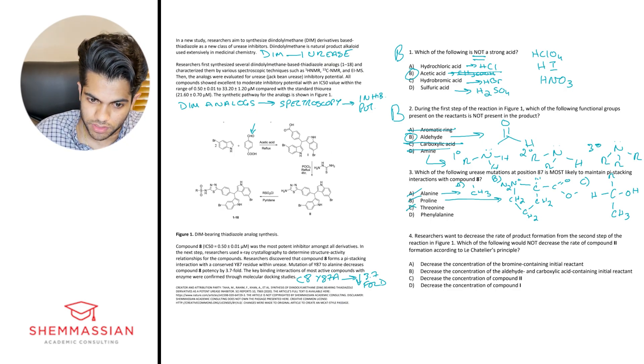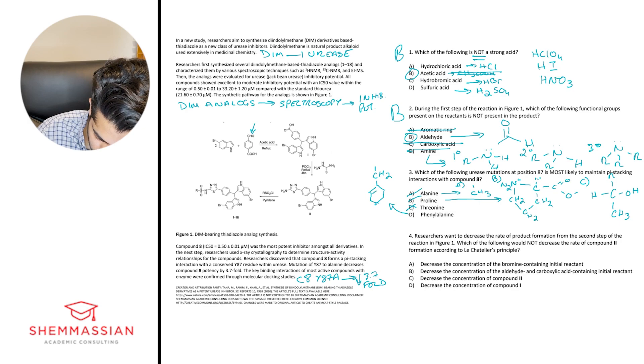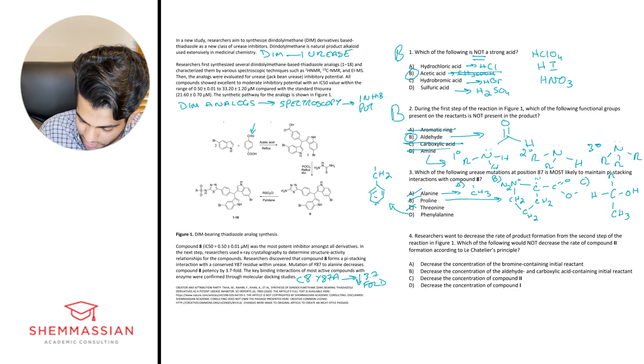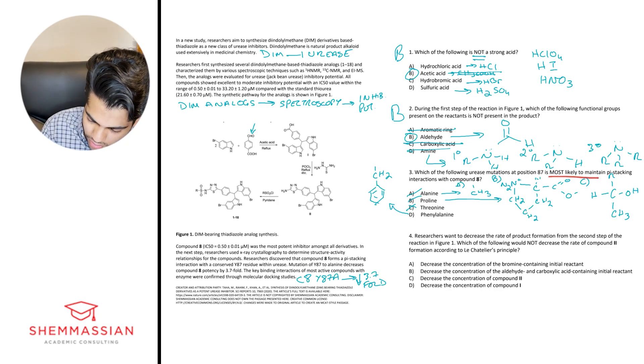And it is correct because phenylalanine and I've run out of space here. I'm gonna probably just write it up here. Phenylalanine looks something like this, CH2, and then this little aromatic ring. And so with that, having the aromatic ring, it means it's going to be the one that's most likely to maintain the pi stacking interactions. So D is our best answer.